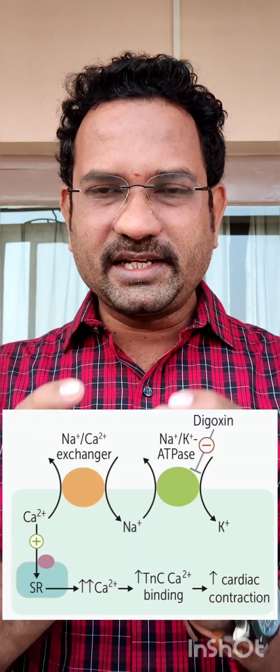Increased force of contraction of the heart is known as the inotropic effect — inotropic effect means increased force of contraction. Increased heart rate is known as the chronotropic effect. Force of contraction is inotropic; rate of contraction is chronotropic. If any agent increases cardiac force of contraction, it is called a positive inotropic agent. Digitalis glycoside is a positive inotropic agent.